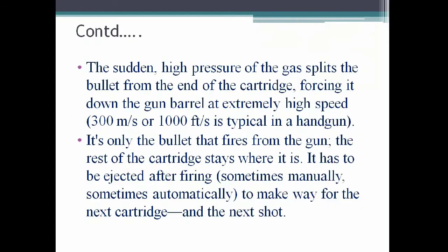The sudden high pressure of gas splits the bullet from the end of the cartridge, forcing it down the gun barrel at extremely high speed — 300 meters per second, or 1000 feet per second, is typical in a handgun. It is only the bullet that fires from the gun; the rest of the cartridge stays in place and must be ejected after firing — sometimes manually, sometimes automatically — to make way for the next cartridge and the next shot.